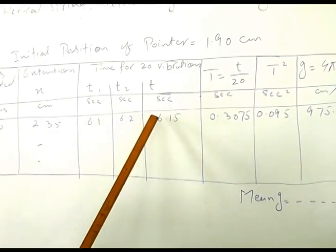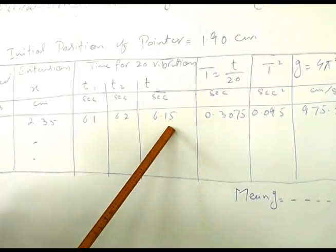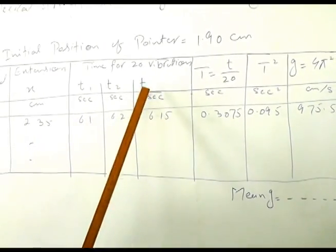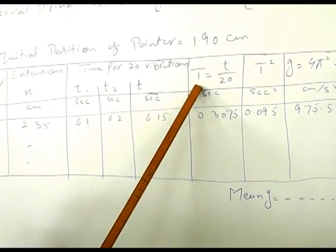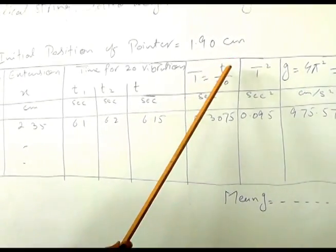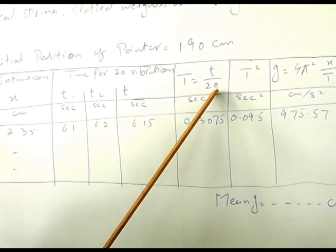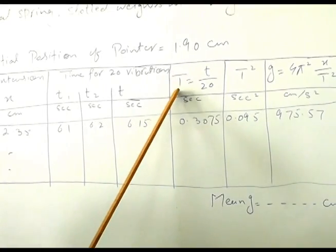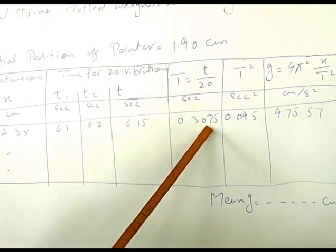We have taken the average of these two values which is 6.15. And as this value is for 20 vibrations, we have to calculate the time period by dividing time by 20. This time period will give us the time of one vibration which is 0.3075.